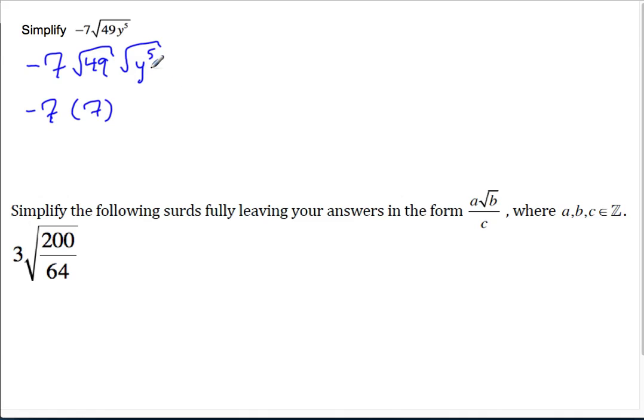But y to the power of 5, an odd power, if we could think about it as y squared times y squared, that would give us y to the power of 4 times y. That's like a y to the power of 1. That would be y to the power of 5.